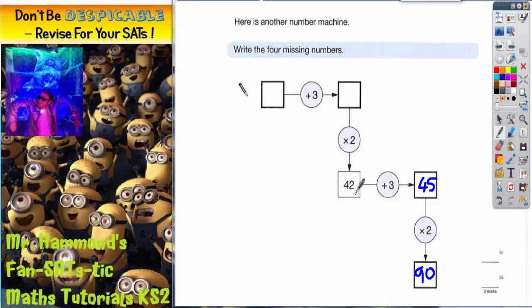If we go back to 42 and try to go backwards, that means we're going the wrong way down the arrow. This arrow goes from the mystery box times 2 to the 42. But to go backwards to the mystery box, we've got to do the opposite of times 2 because we're going in the opposite direction.